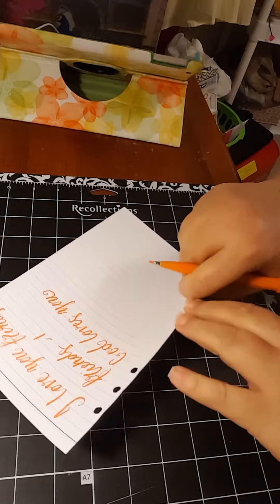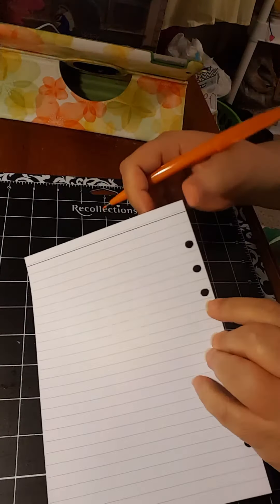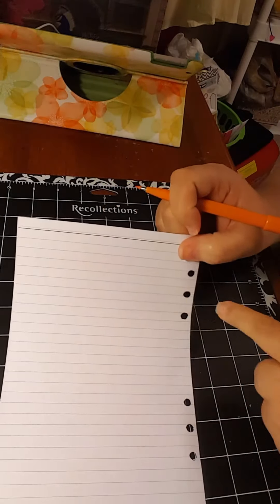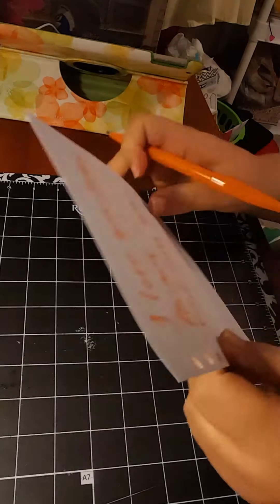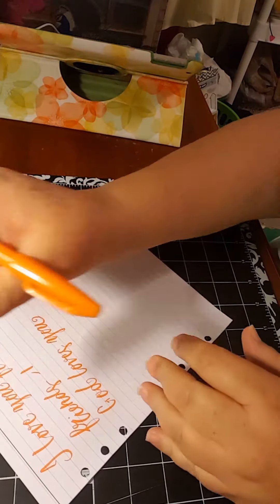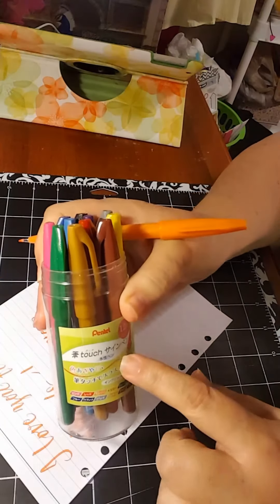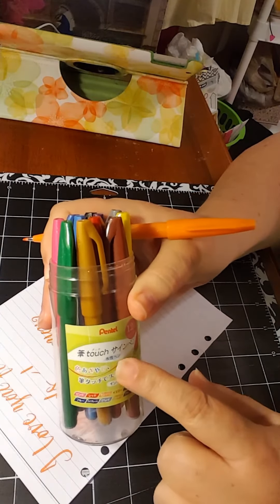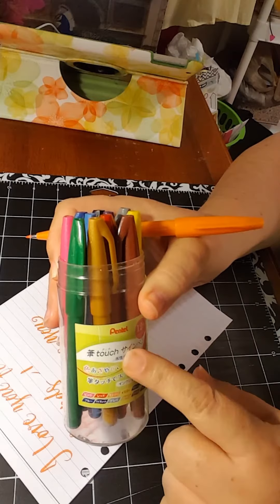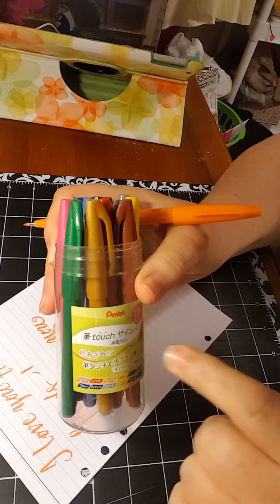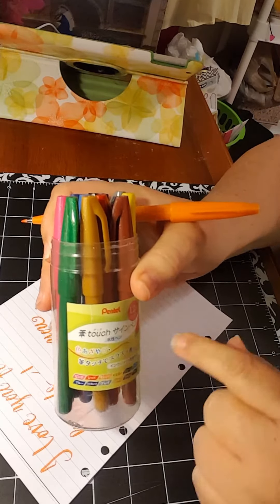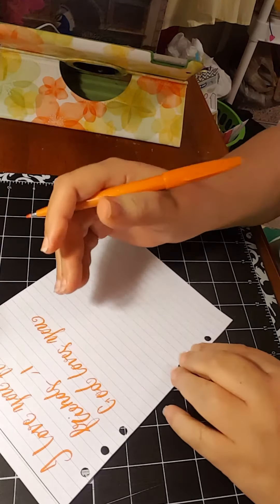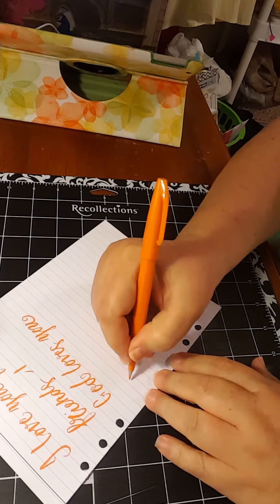You can see there's not even one dot that shows any bleeding. I am using the Pentel FUDE markers—that's F-U-D-E Pentel FUDE brush markers. So I'm going to do my alphabet.